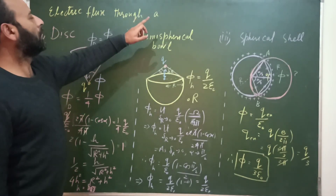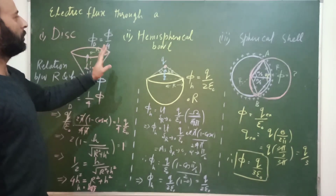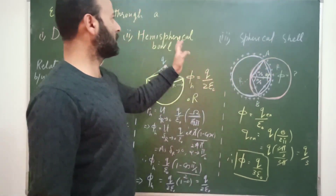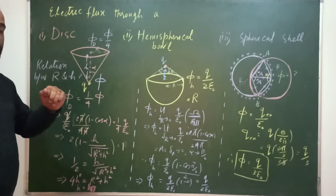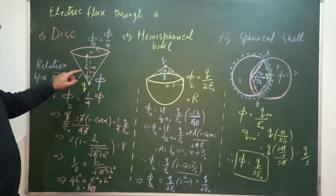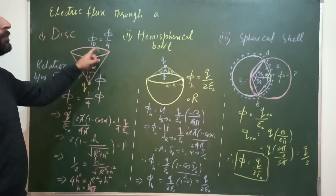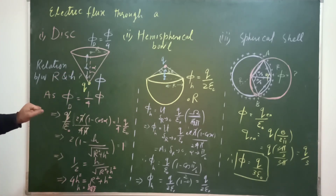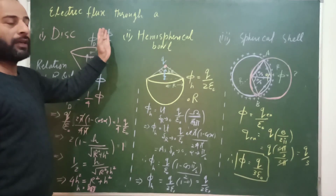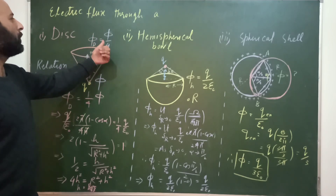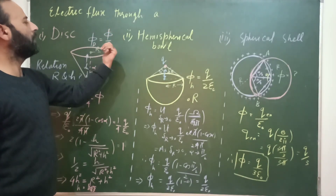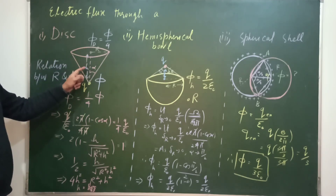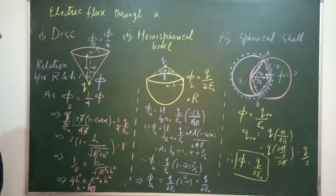The electric flux through a surface is divided into three parts: through the disc, through the hemispherical bowl, and through the spherical shell. The first part requires finding the relation between the height H of the cone and the radius R of the base of the cone, given that a charge is placed at the apex and the electric flux through the base disc is one-fourth of the total flux, i.e., φ_disc = φ/4.